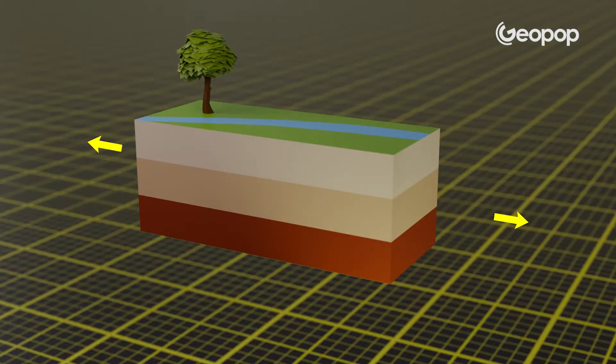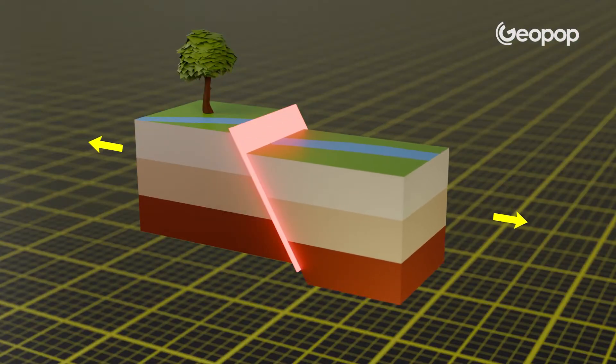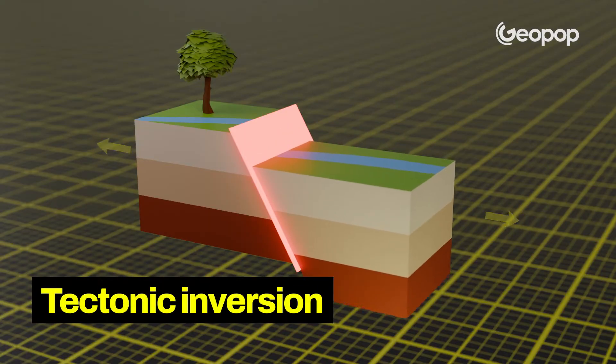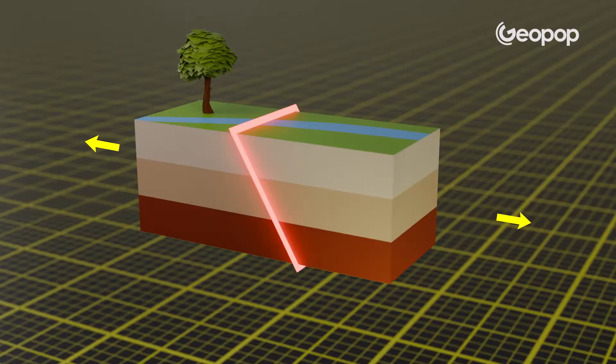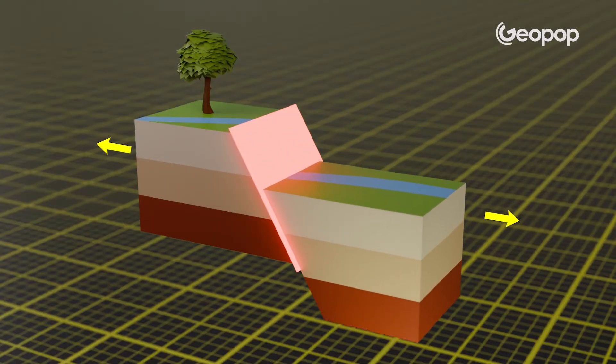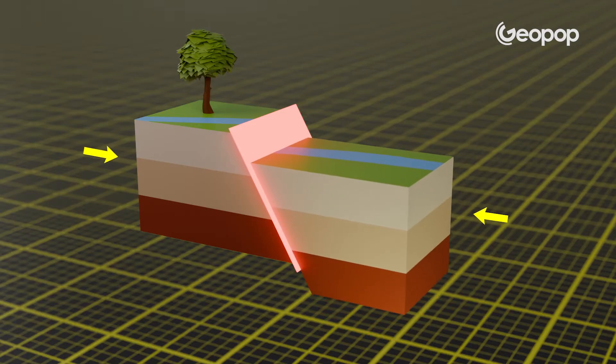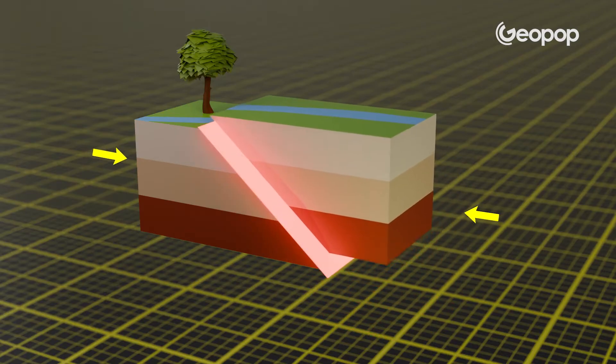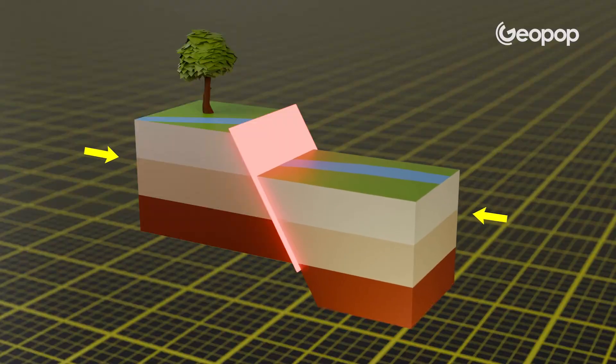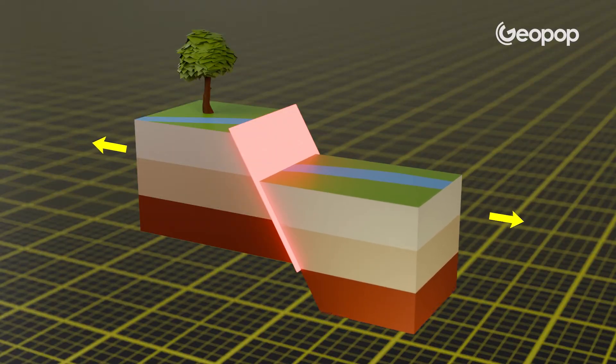There are faults with steps that are over a kilometer high — meaning those faults have been reactivated countless times. Can a fault change from being a normal fault to a reverse fault over its geological life? Yes, and in that case it's known as tectonic inversion. Tectonic forces change over geological time, so a normal fault that originally formed in an extensional setting can find itself in a compressional setting and become a reverse fault. In nature, it's much rarer to find a reverse fault that turns into a normal fault.